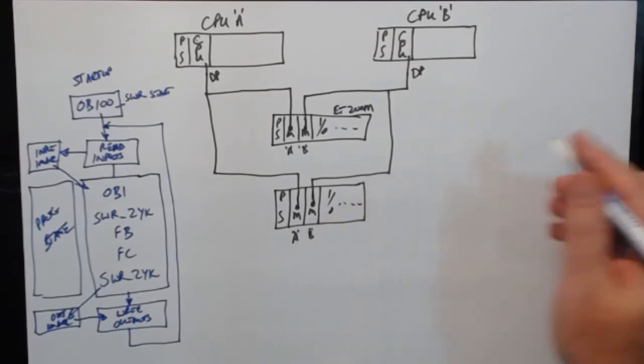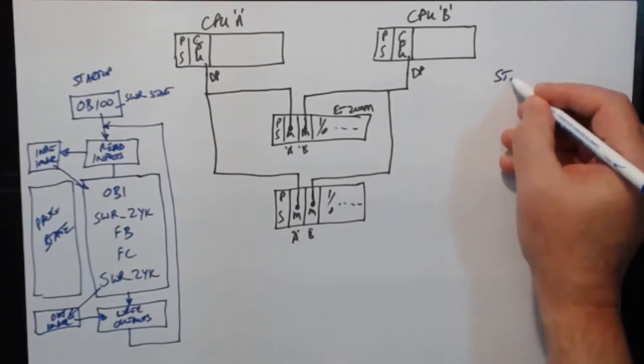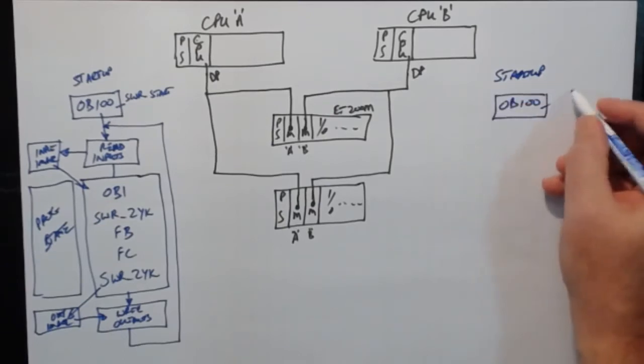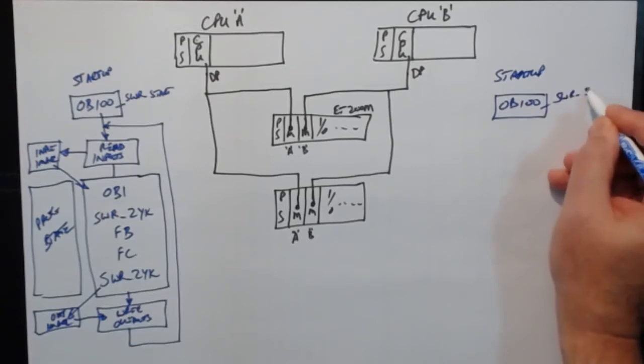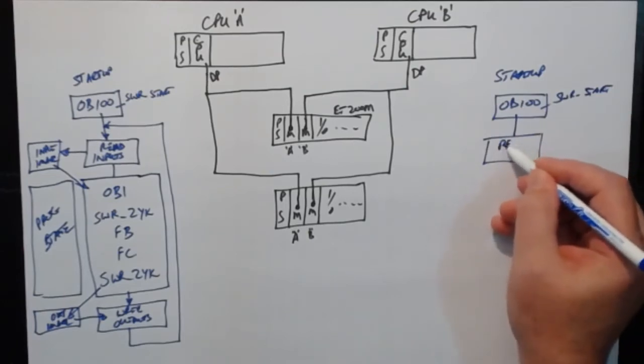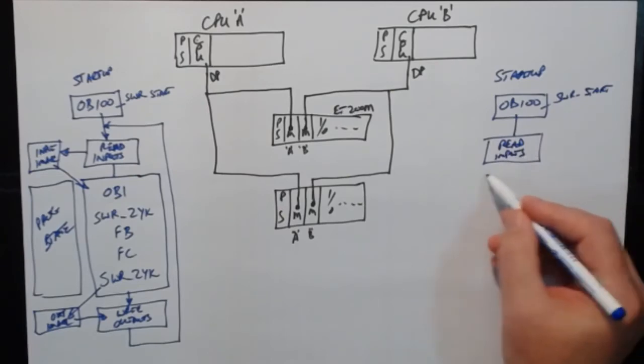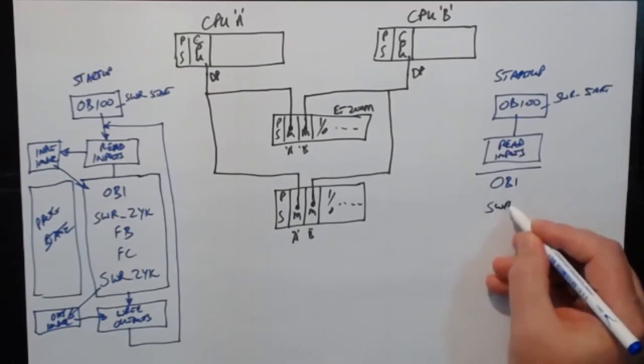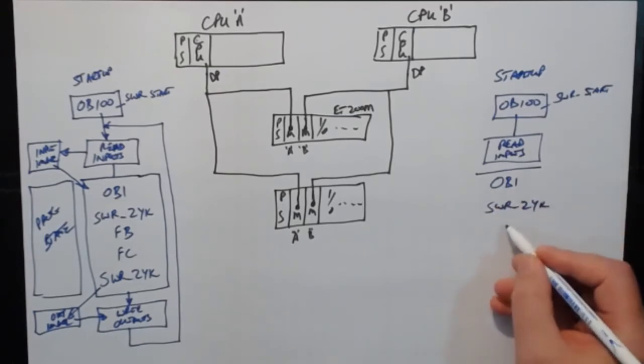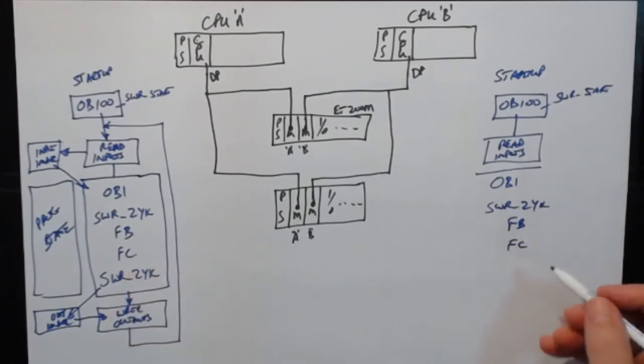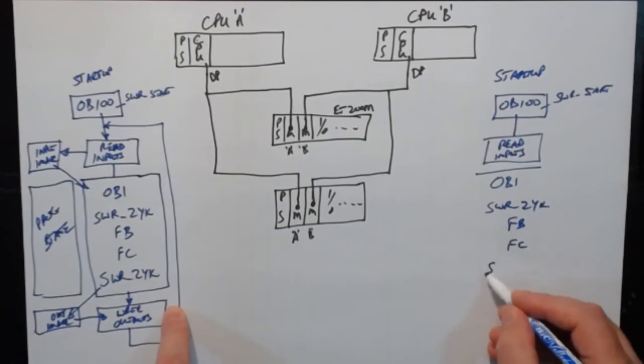Let's take a look on this. This PLC is exactly the same. It's got the startup OB100. In OB100 we make a call to SWRSTART. Then read the inputs and then drop into OB1. And in OB1 we call SWRZYK. Then we have identical program blocks, FBs, FCs. There are more than one of these. They are all redundant program. End of this, we call the same function block again.